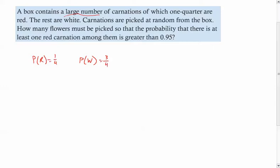Alright. So let's keep going. Carnations are picked at random from the box. How many flowers must be picked so that the probability that there is at least one red carnation among them is greater than 0.95?